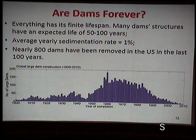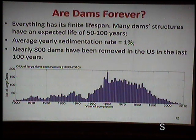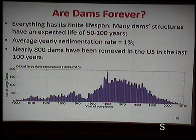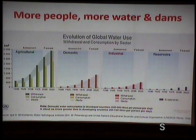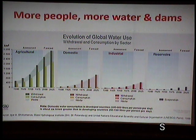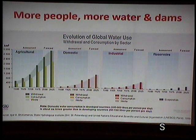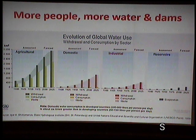The consequences are severe: population is increasing, we need more water and more dams, but we are not building new dams. Even existing dams are seeing their capacity decrease over time. Agricultural, domestic, and industrial water demand is all increasing, while dam storage is shrinking.